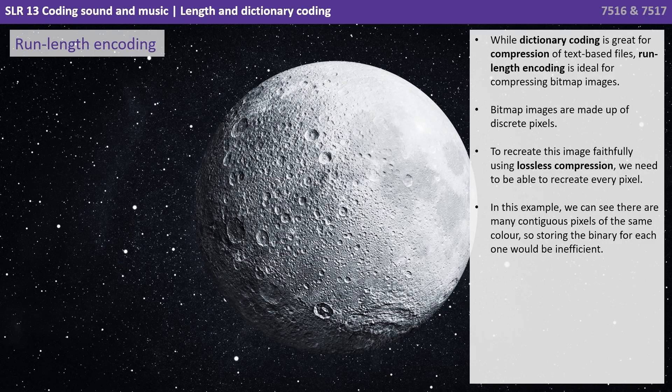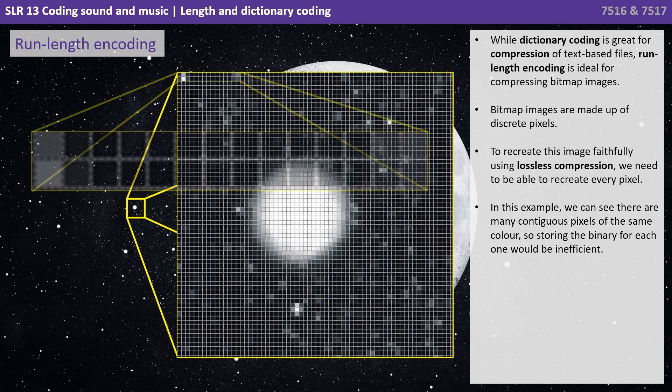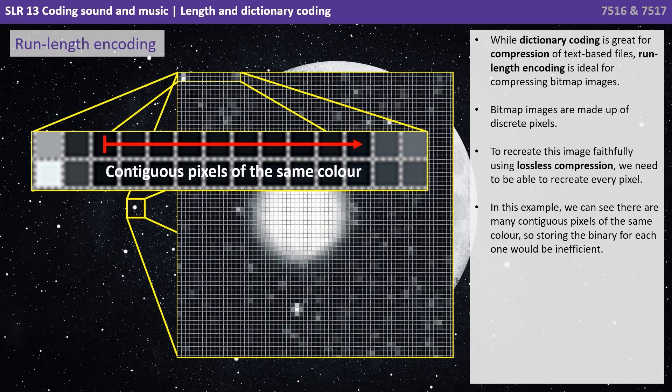While dictionary coding is great for compression of text-based files, run length encoding is ideal for compressing bitmap images. Bitmap images are made up of discrete pixels. To recreate this image faithfully using lossless compression, we need to be able to recreate every pixel. In this example we can see there are many contiguous pixels of the same colour, so storing the binary for each one would be inefficient.